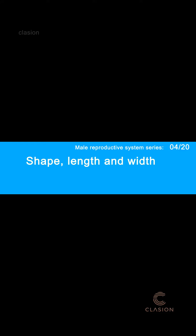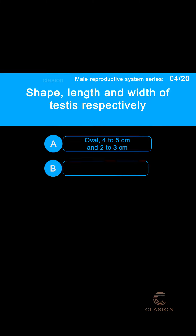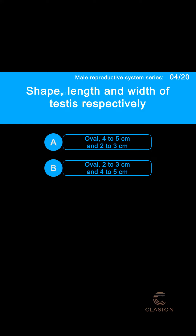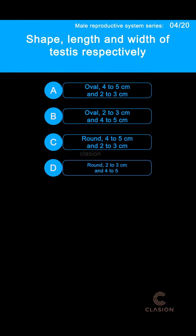Shape, Length and Width of Testes respectively. Option A: Oval, 4-5 cm and 2-3 cm. Option B: Oval, 2-3 cm and 4-5 cm. Option C: Round, 4-5 cm and 2-3 cm. Option D: Round, 2-3 cm and 4-5 cm.